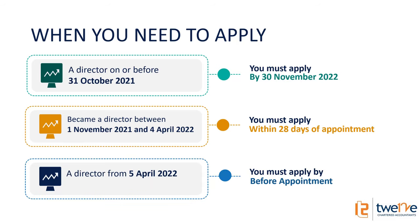And then from the 5th of April next year, you need to get your Director ID before you become a director. So after the 5th of April, if you're already a director and you know you've got until the 30th of November to get your ID, but then you want to set up a new company or become a director of your brother's company - before you do that, you need to have your ID. I know that's going to be a pain, because someone's going to say, 'Quick, Derek, get me a company,' and I'll say, 'I can't appoint you as a director unless you've got a Director ID.'